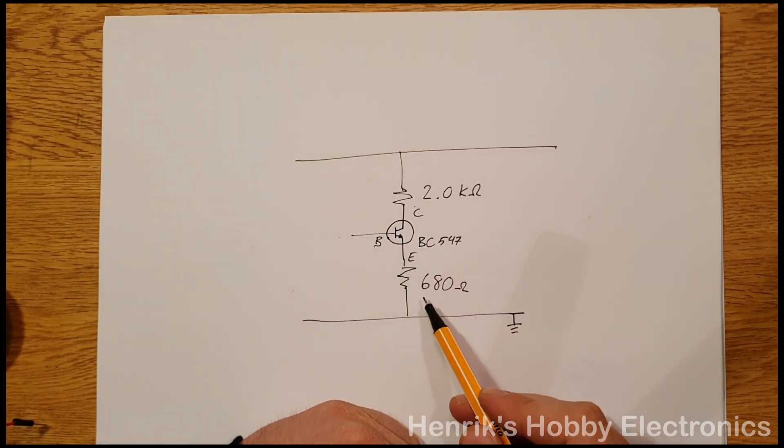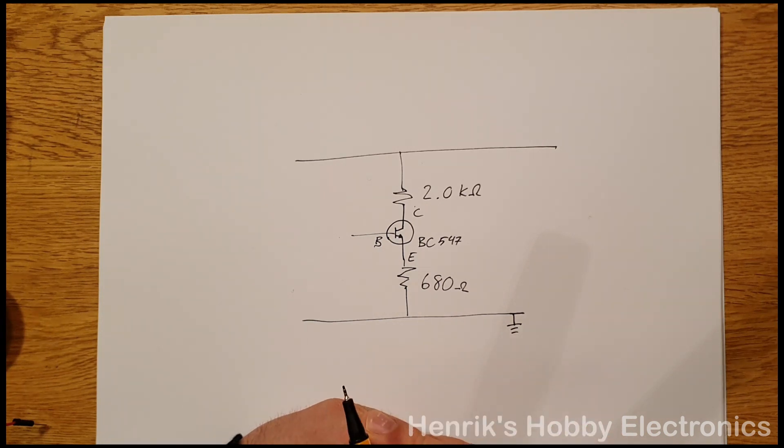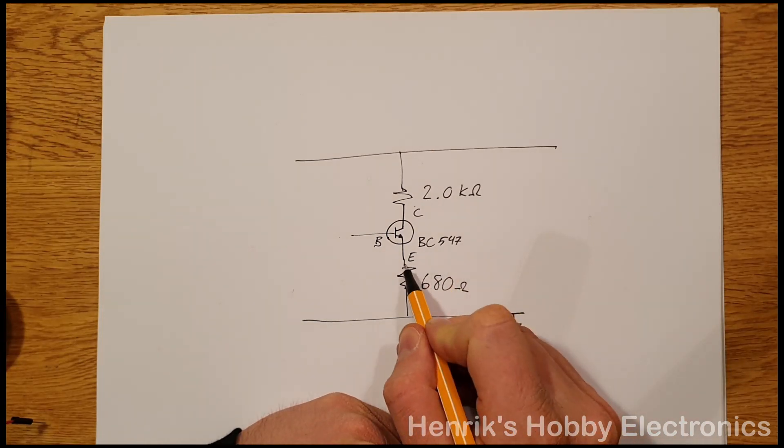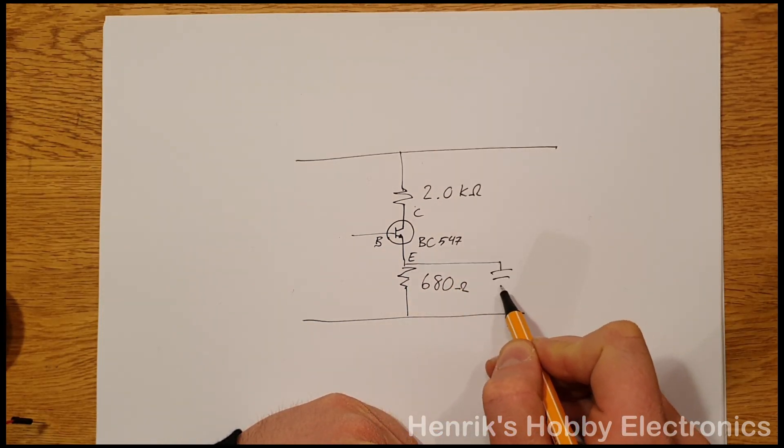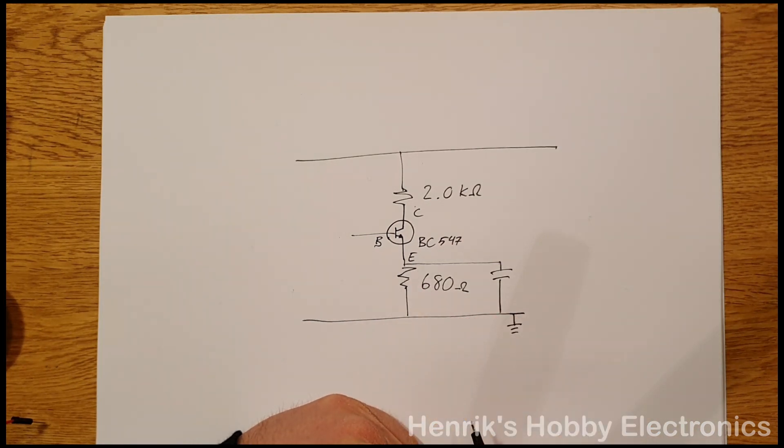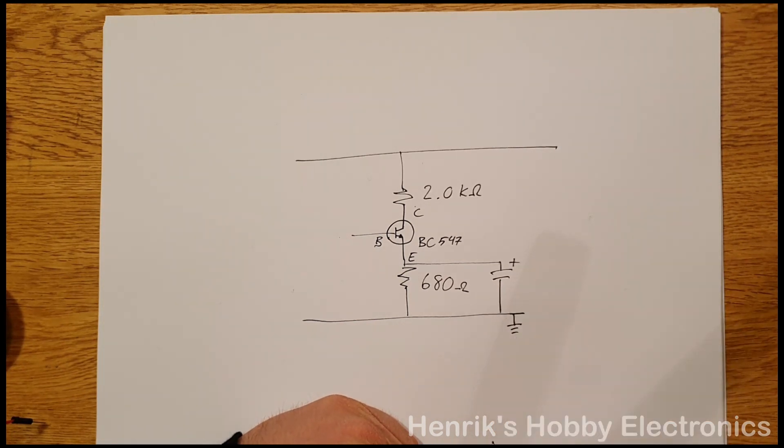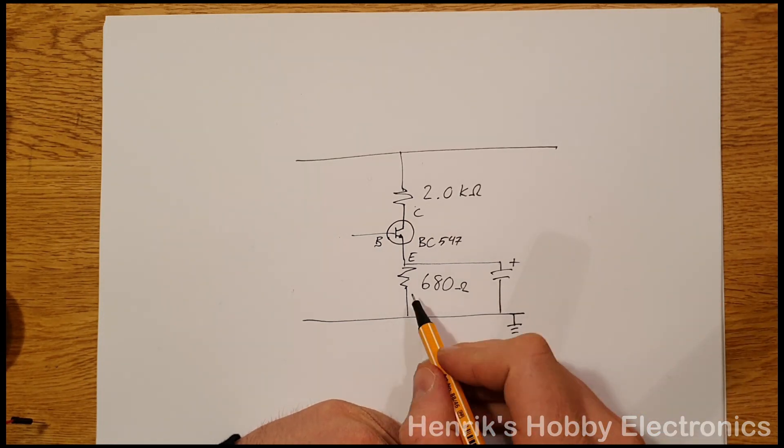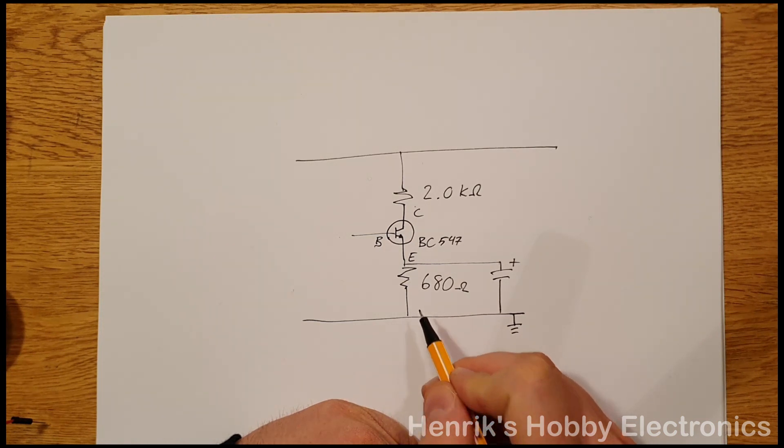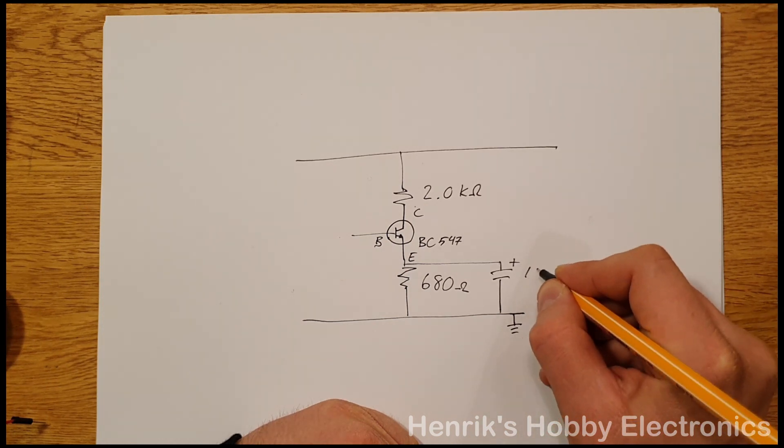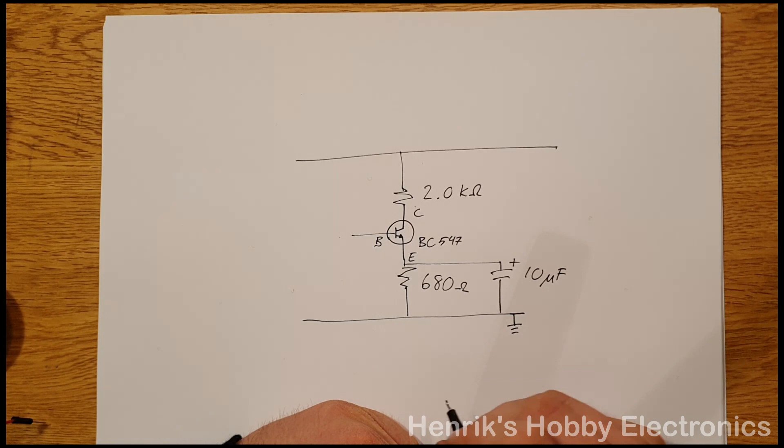Now we want to limit the DC current but we don't want to limit the AC current which is the current that we want to amplify, and therefore we put also here a bypass capacitor. If we use an electrolytic capacitor we should remember to use the positive side with long leg on the top side here. So the idea now is that while the 680 ohm resistor will limit the DC current, the AC current will pass through the capacitor instead. I will use a 10 microfarad capacitor here. The exact value of this capacitance is not so sensitive.